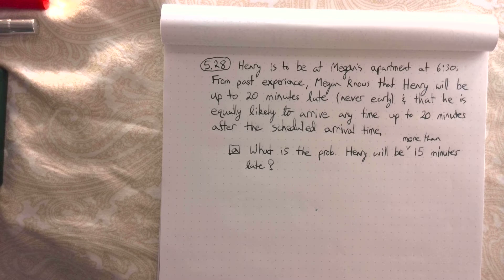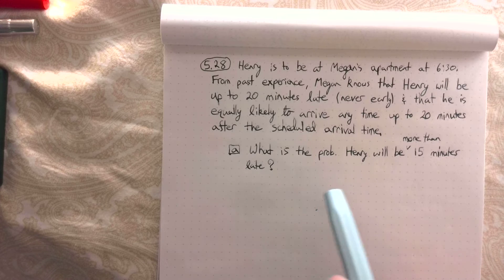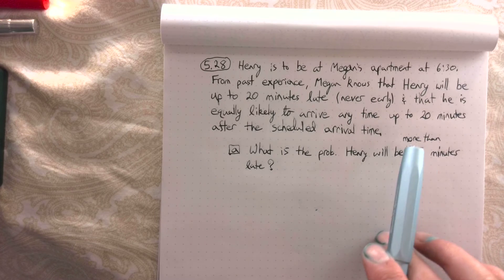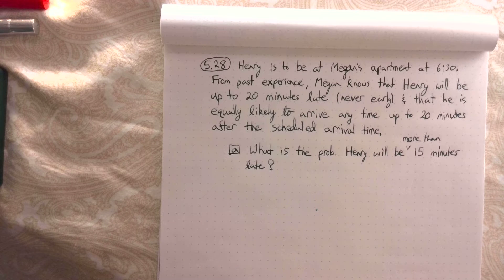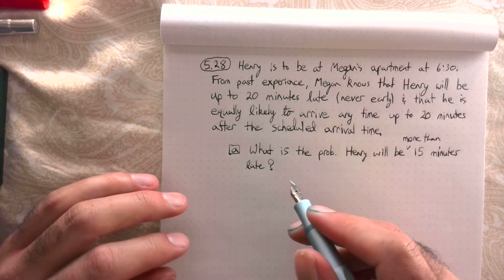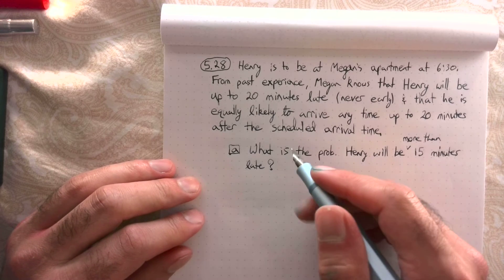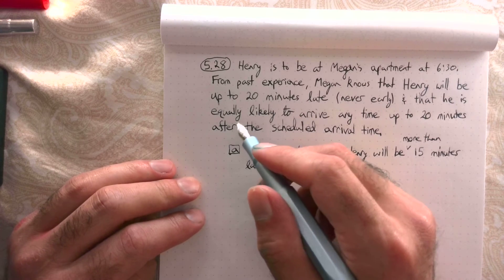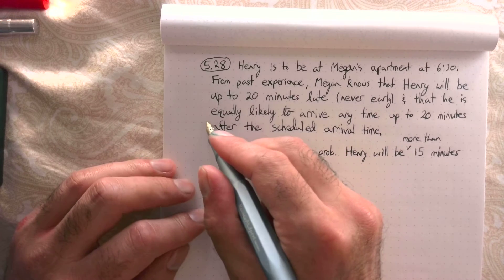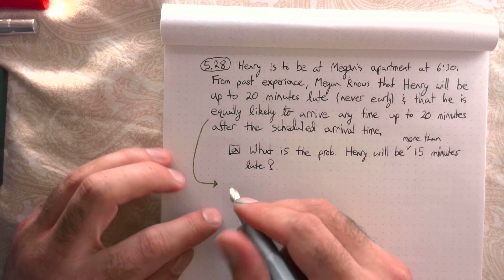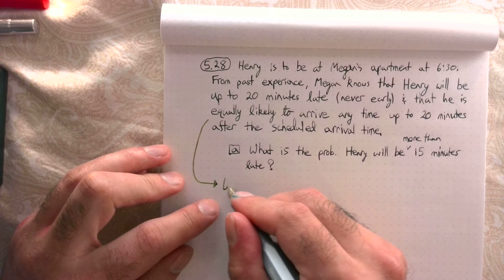The first question asks: what is the probability Henry will be more than 15 minutes late? The phrase 'equally likely' — also confirmed by the section we're in — tells us that we're dealing with a uniform random variable.